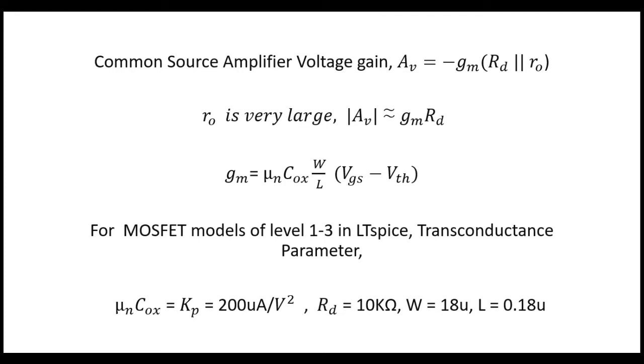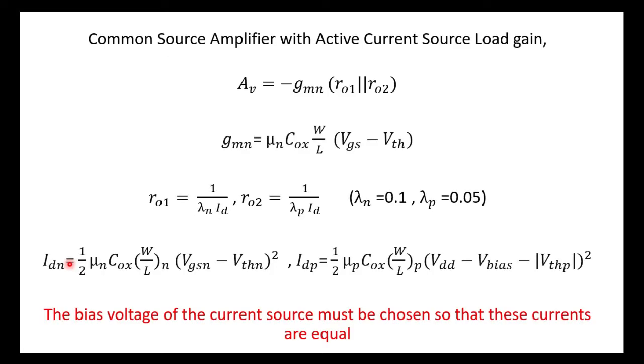This is the idea behind the common source amplifier with the current source load. But we can't have an ideal current source in the true scenario, so we can have a MOSFET. A MOSFET in saturation region acts as a current source, so we can have the load which is RD as a PMOS kept in saturation region. So let's discuss the design of common source amplifier with the active load or current source load.